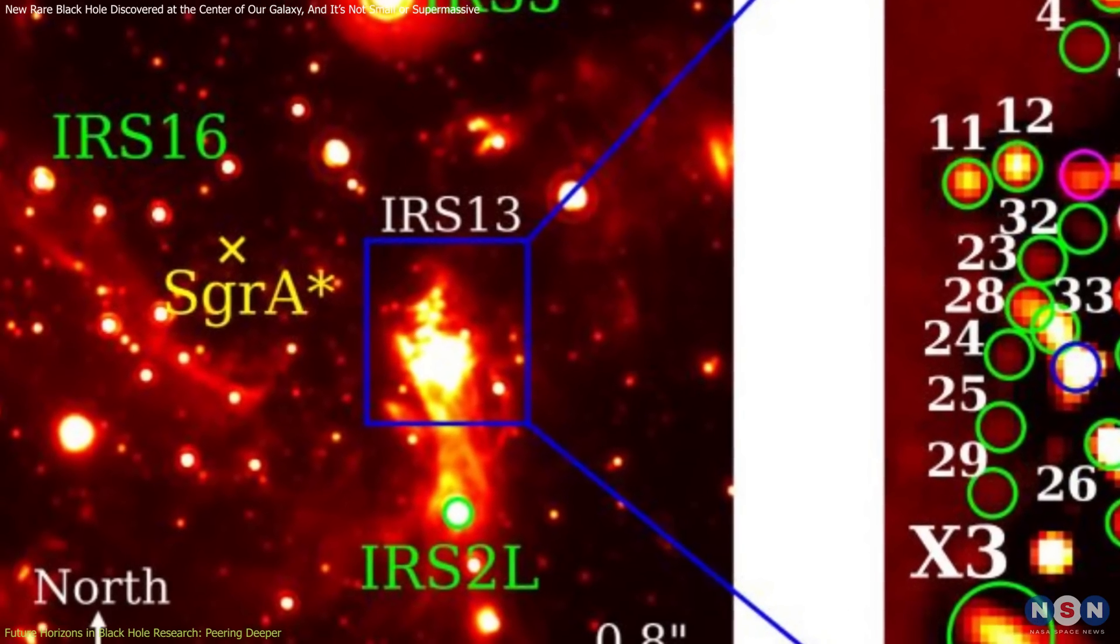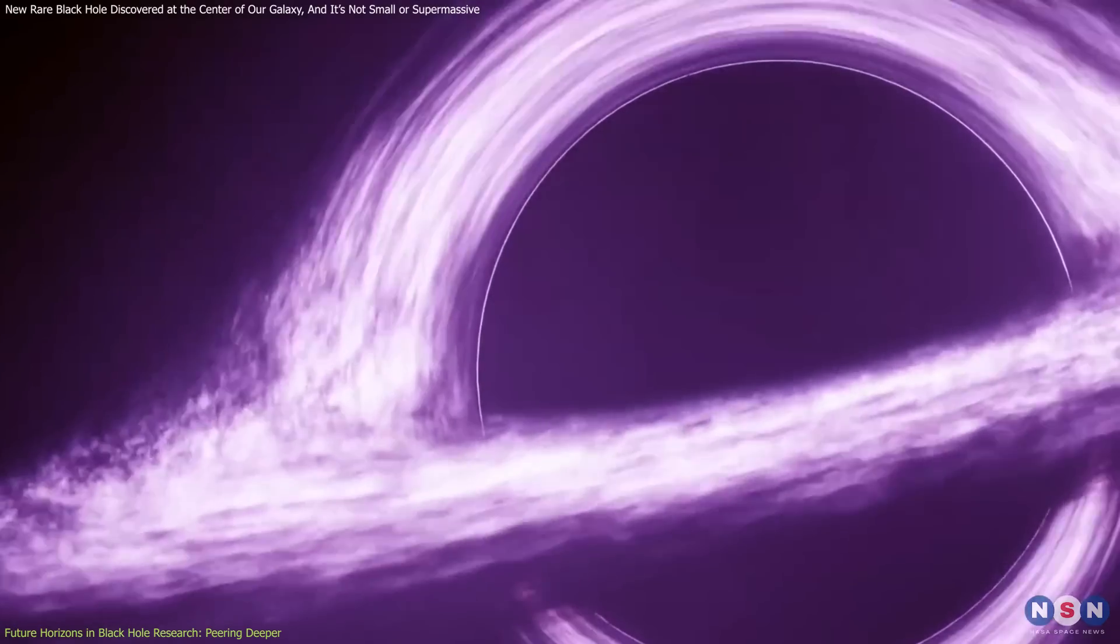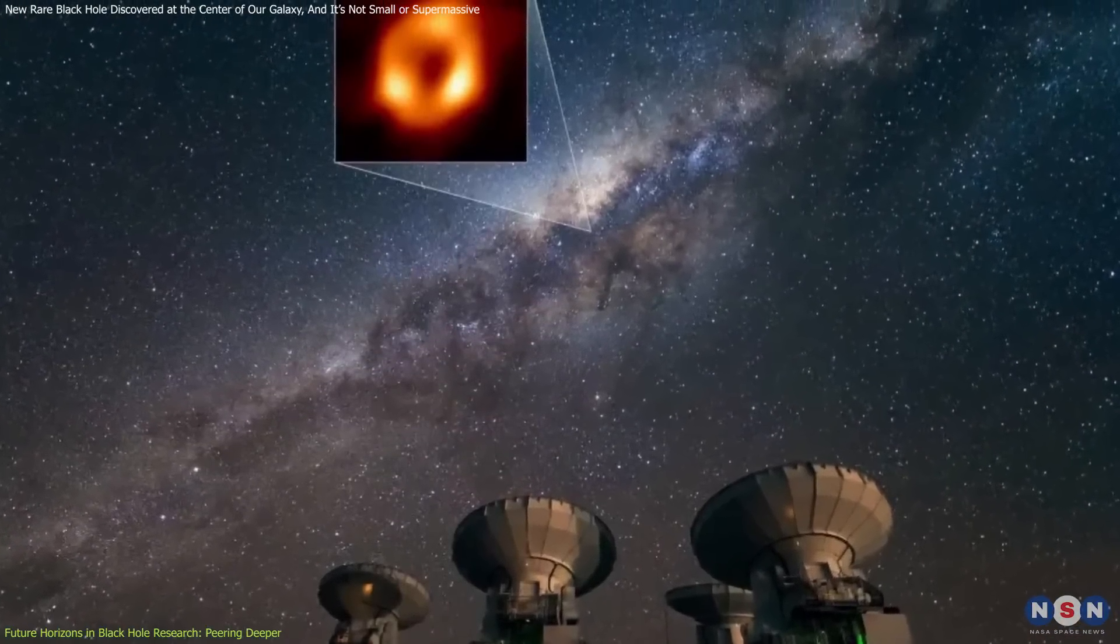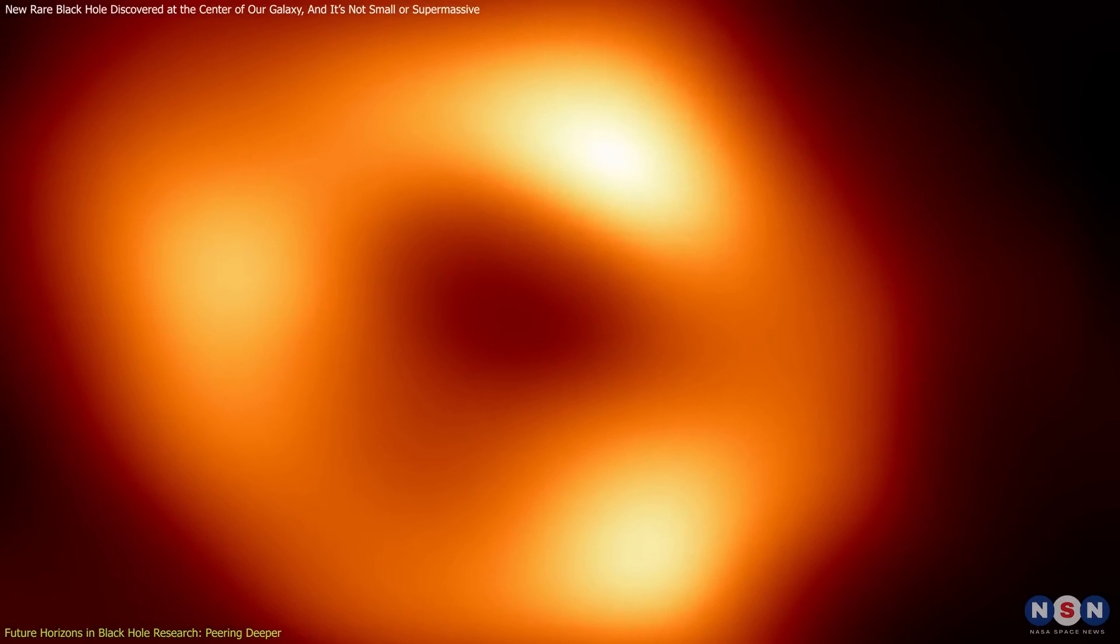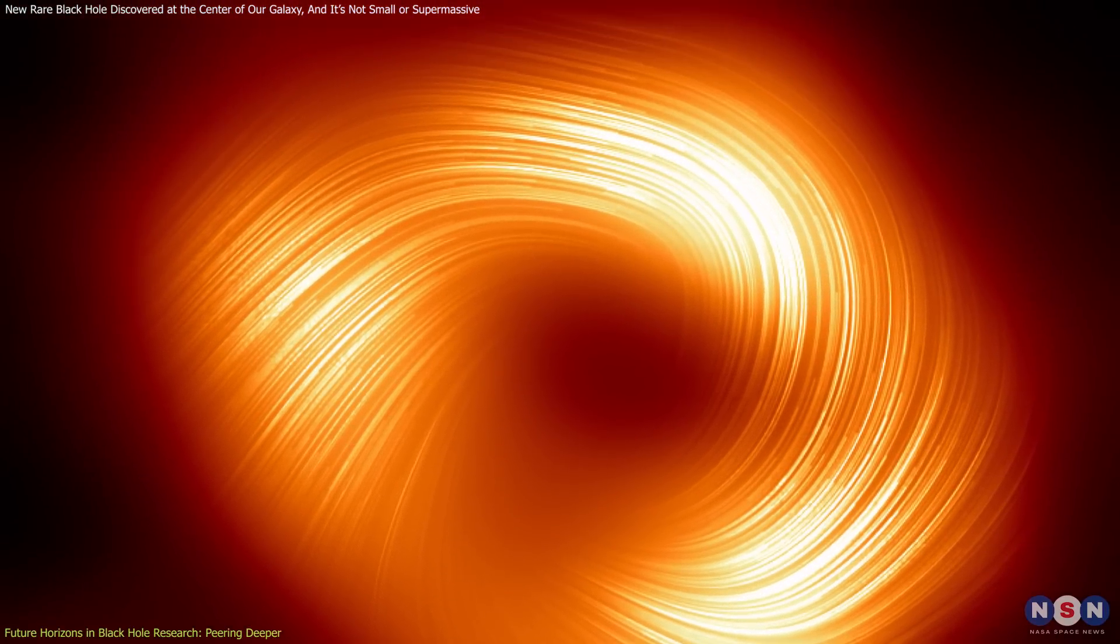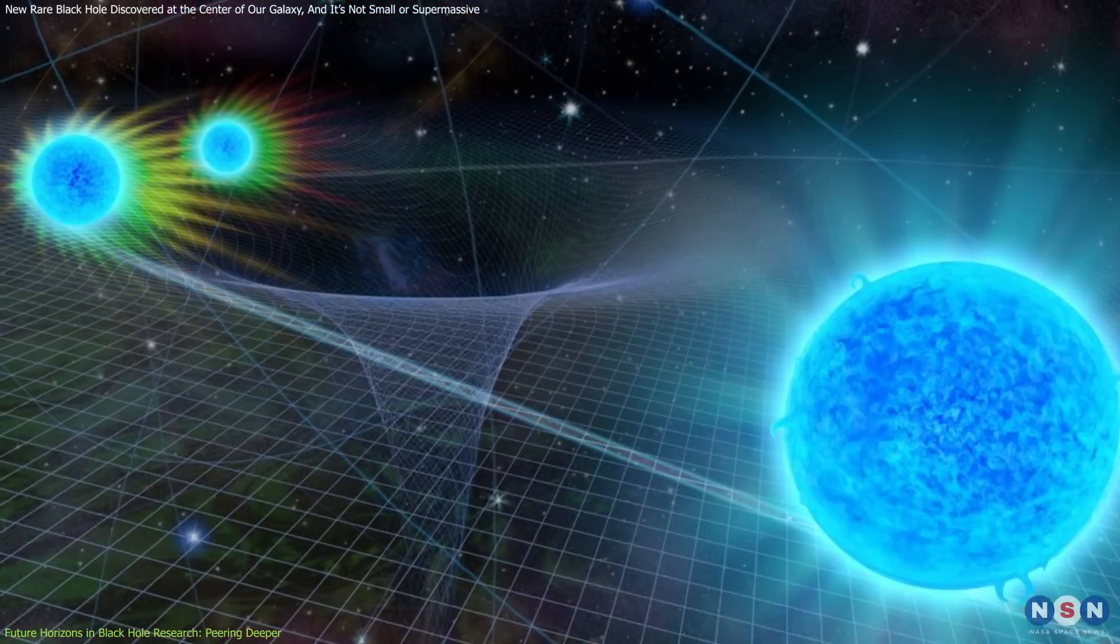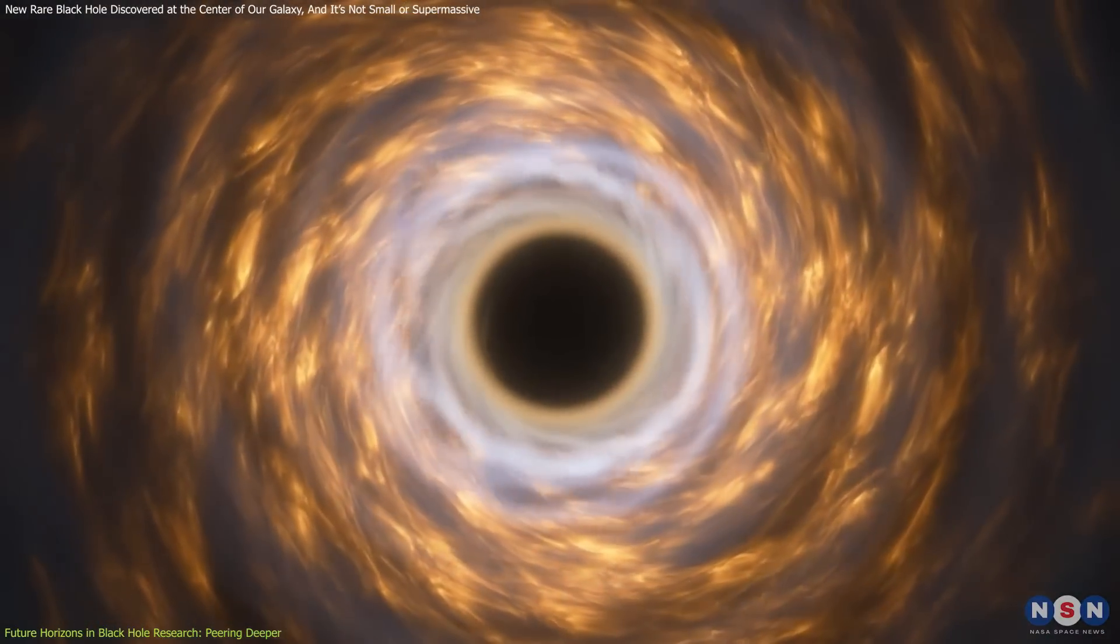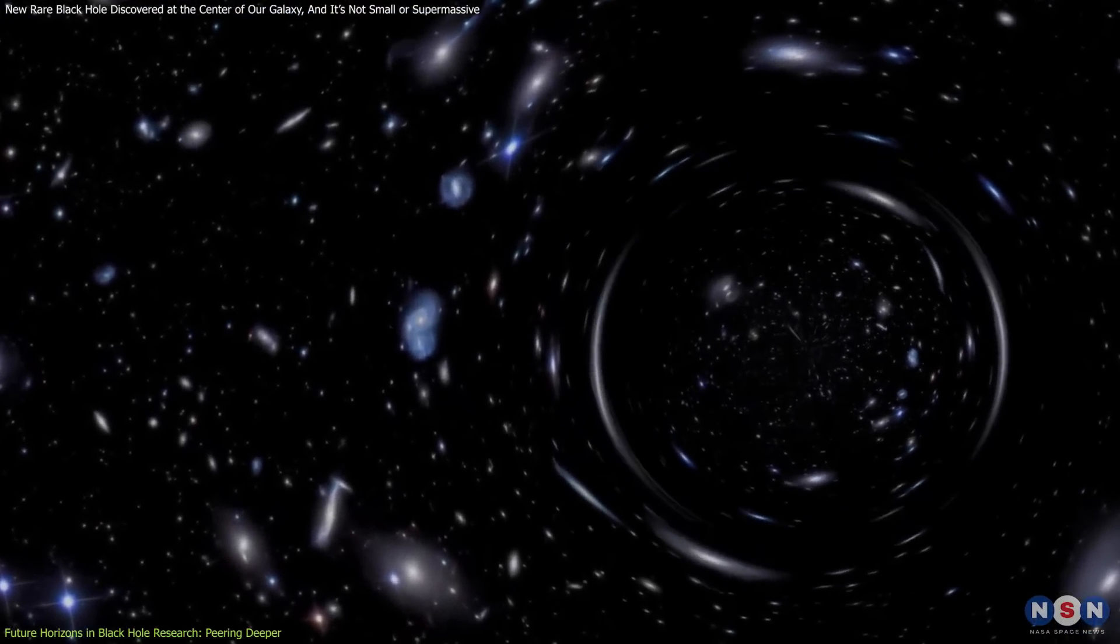With the recent discovery of an intermediate-mass black hole in the IRS-13 star cluster, our understanding of the universe's most enigmatic objects is set to expand dramatically. The Event Horizon Telescope has provided us with the first-ever image of Sagittarius A star, the supermassive black hole at the center of our galaxy. This historic achievement is not just a visual wonder, but a scientific breakthrough that enhances our understanding of black hole physics. The image serves as a direct test of Einstein's general theory of relativity near a black hole. By observing the light bending around the black hole's immense gravity, we gain insights into the behavior of space, time, and matter under extreme conditions.